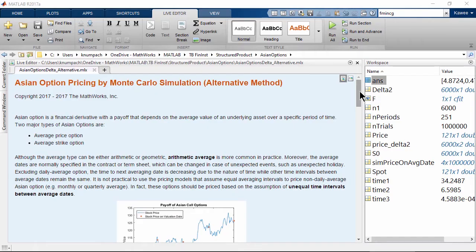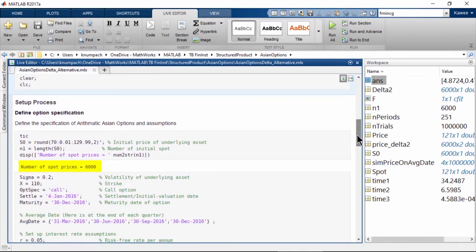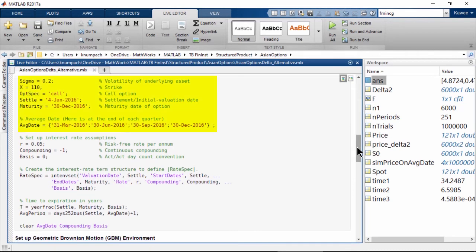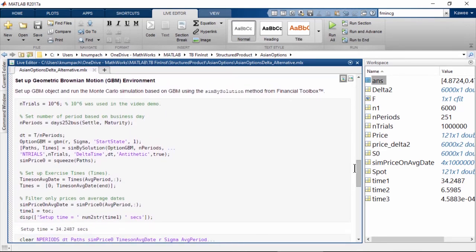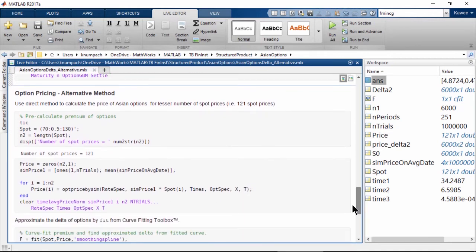Now, let's switch to MATLAB. In this example, we are going to find 6,000 option prices and deltas. First, we need to define the option specification. To reduce the computational cost of Monte Carlo simulation, we shouldn't regenerate the simulation path every time for each option. So, we can do one-time setup of simulation path here using SimBM solution from Financial Toolbox. Now, we can move on to the pre-calculation process.